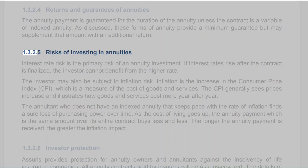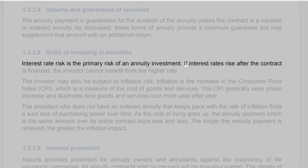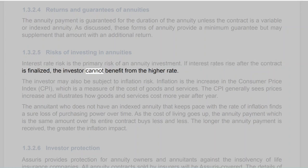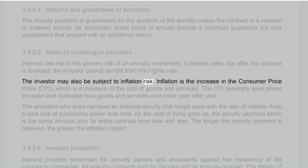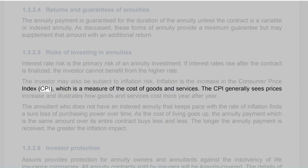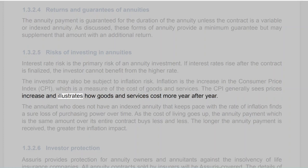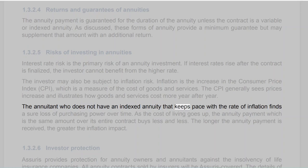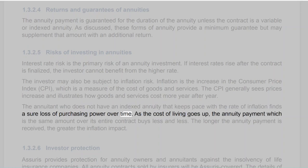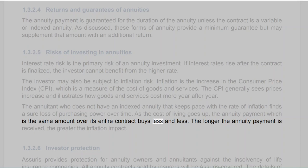Section 1.3.2.5: Risks of Investing in Annuities. Interest rate risk is the primary risk — if interest rates rise after the contract is finalized, the investor cannot benefit from the higher rate. The investor may also be subject to inflation risk. Inflation is the increase in the consumer price index (CPI), a measure of the cost of goods and services, which generally sees prices increase year after year. An annuitant without an indexed annuity finds a sure loss of purchasing power over time — as the cost of living goes up, the same annuity payment buys less and less. The longer the annuity payment is received, the greater the inflation impact.